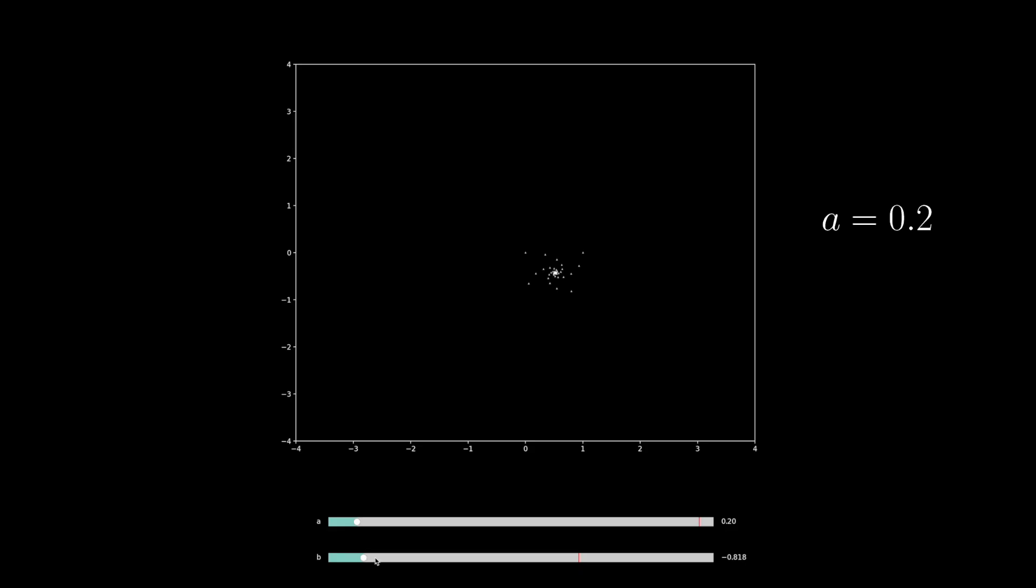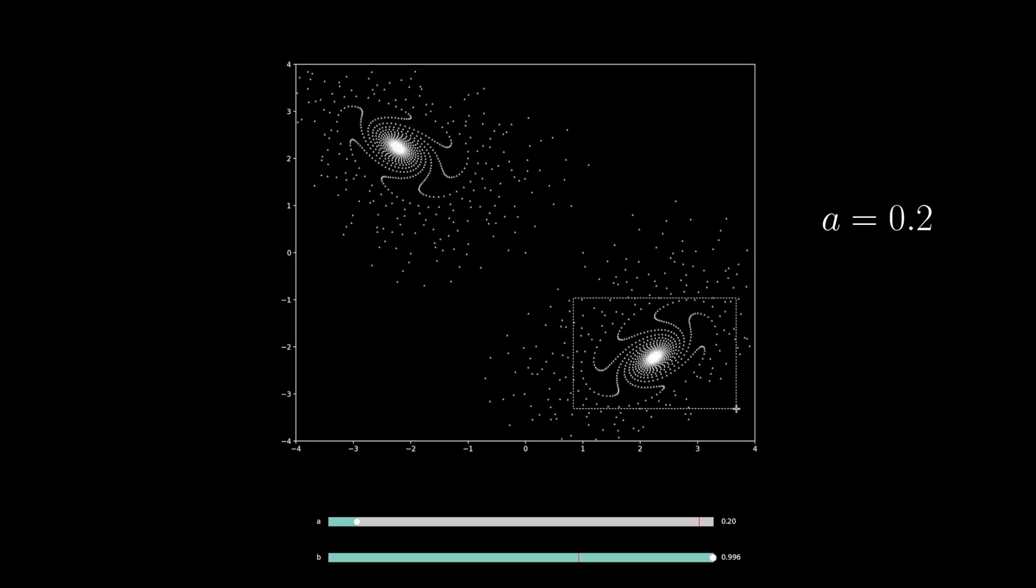Now let's increase B towards 1. We see things again converging to a single point. And then it splits into 2. And we see spirals growing around each area of convergence. Let's zoom in on this one.